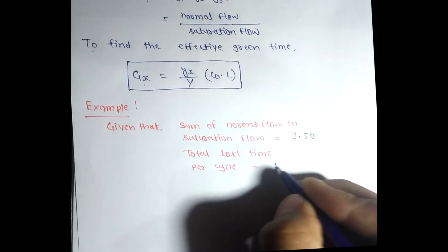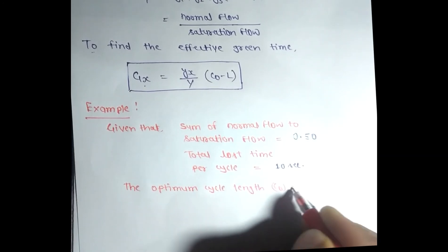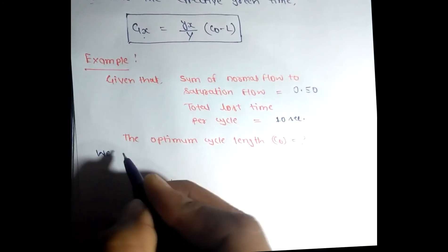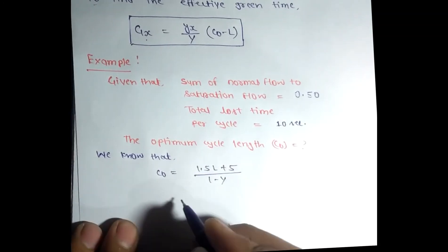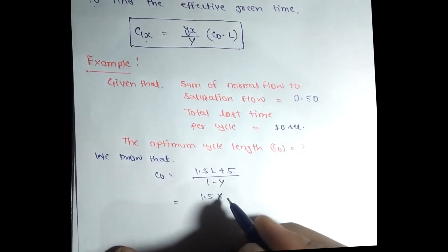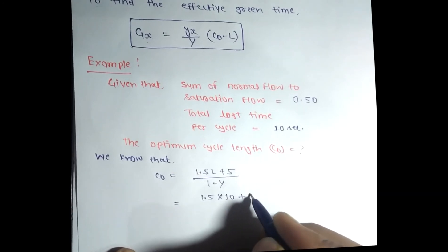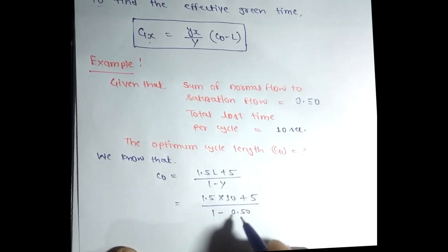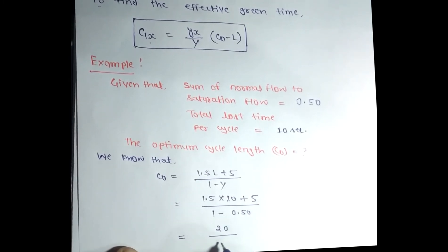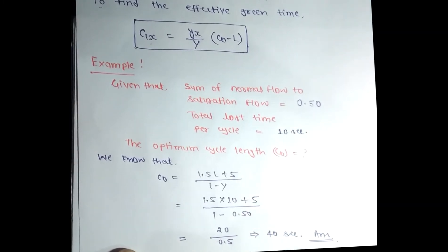The question asks us to find the optimal cycle length. Using the formula Co = (1.5L + 5) / (1 - Y), putting L = 10 seconds and Y = 0.5, we get the optimum cycle length equal to 40 seconds.